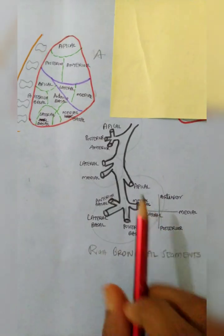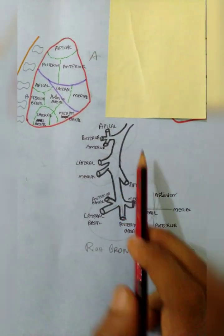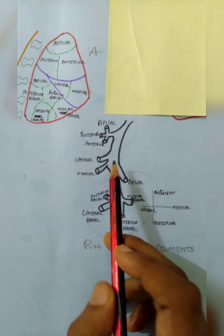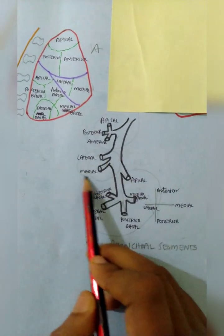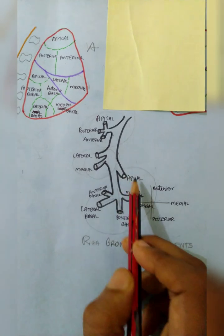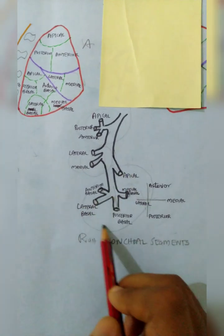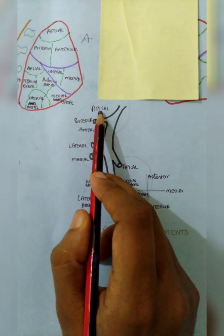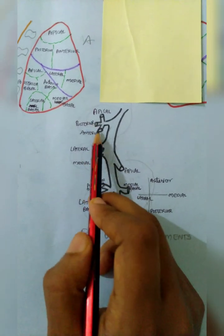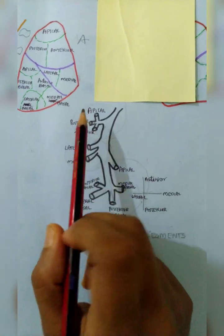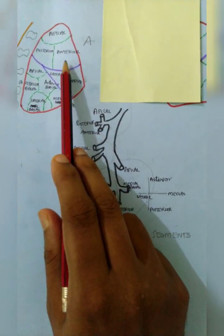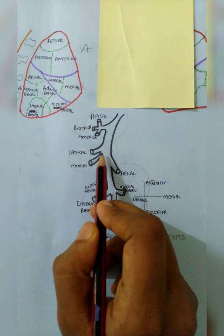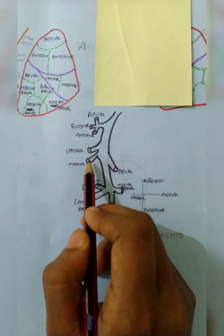This is the right bronchial segments. This portion corresponds to the upper lobe, this one to the middle lobe, and this one to the lower lobe. In the upper lobe, there is the apical, then posterior and anterior — corresponding to the upper lobe segments. Then the middle lobe has got lateral and medial.